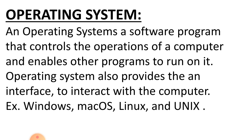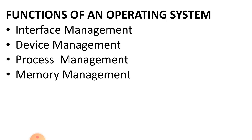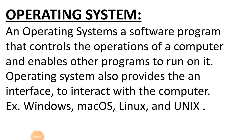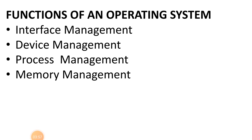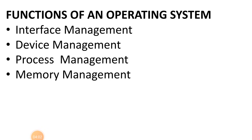Now we have to see about the functions of an operating system. Which functions does the operating system perform? It performs interface management — that is the first function. Also, device management, process management, and memory management. All these are the functions of an operating system. We will see about these functions in detail.